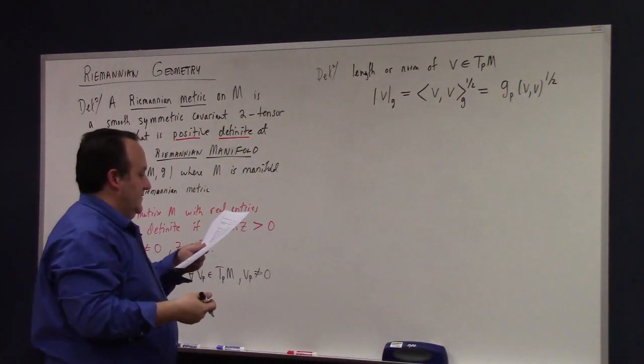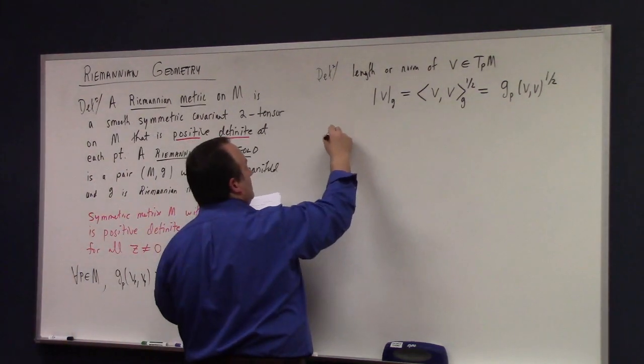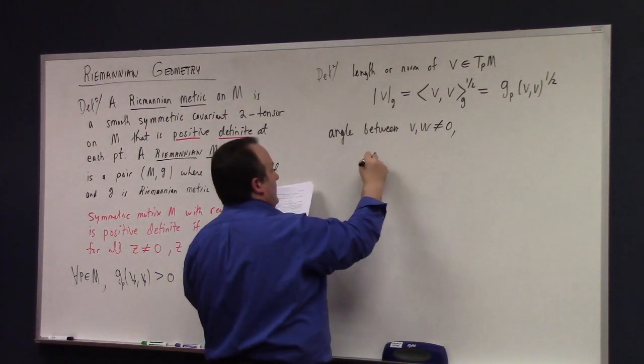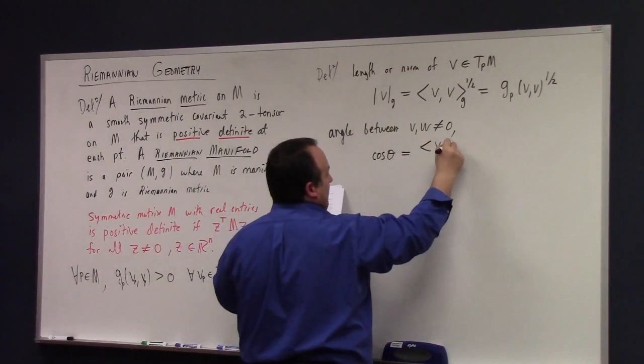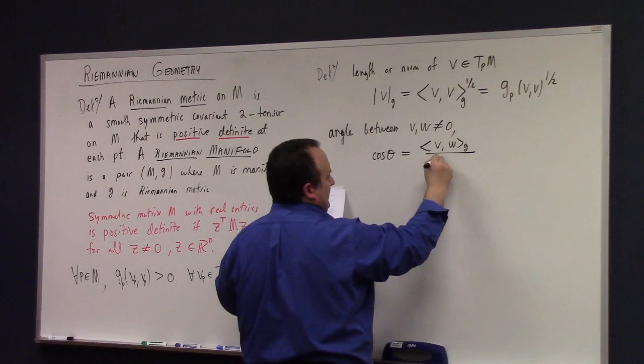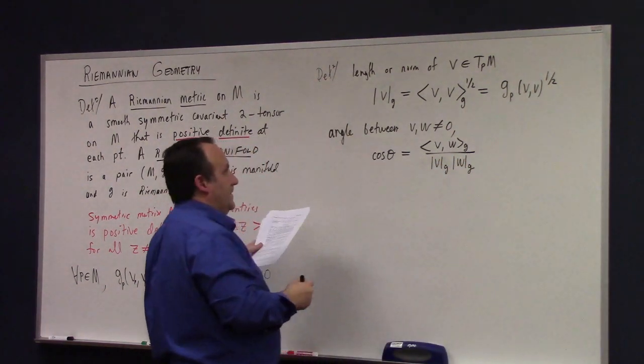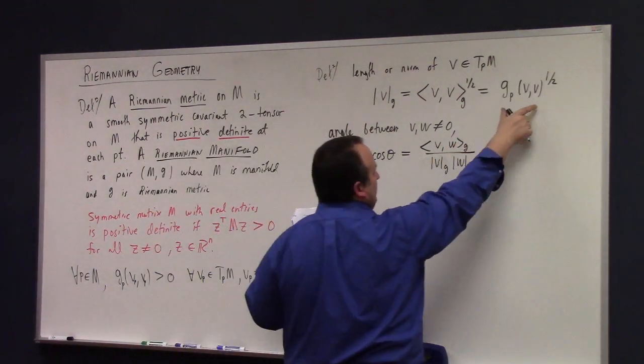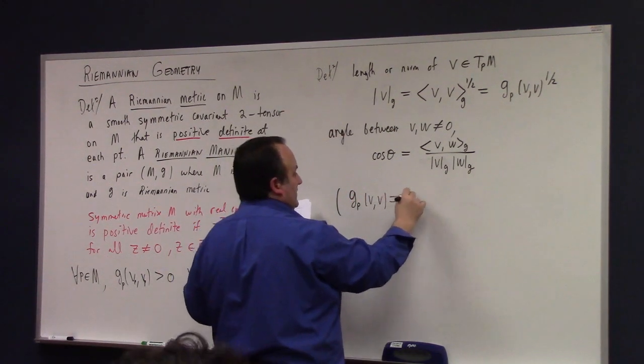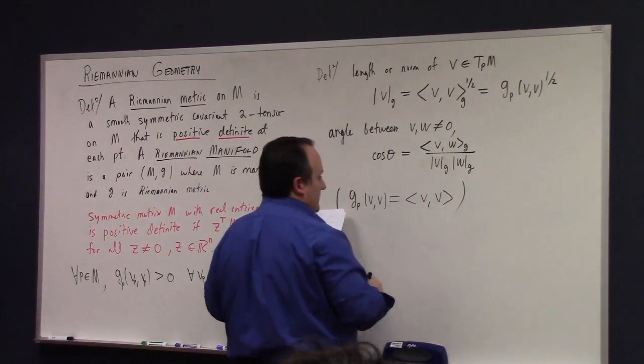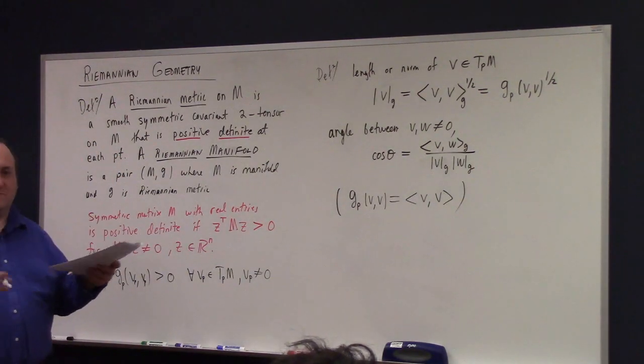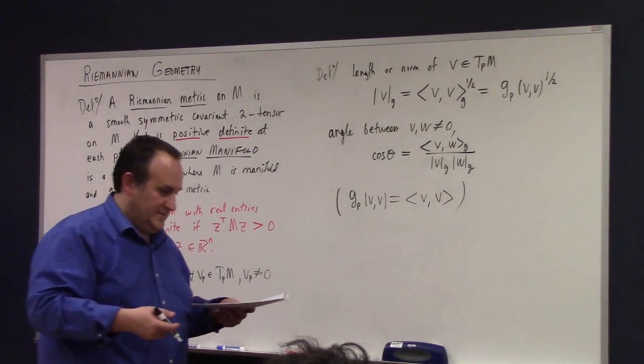Or, if you like, another. Why have one notation when you can have three? G, P, V, V to the one-half. He has an aversion to square roots of gas. I don't know. And you can also define the angle between VW not equal to zero, right? And it's implicitly defined by the cosine of theta being VWG divided by the length of V and the length of W.